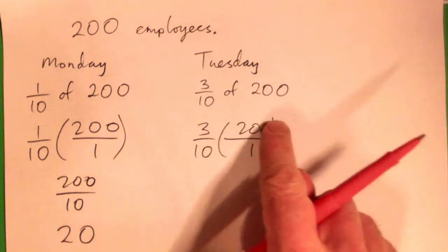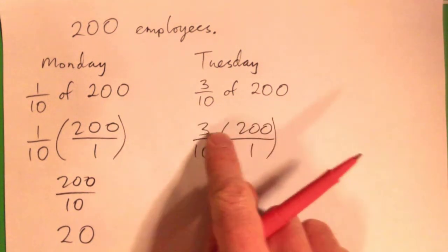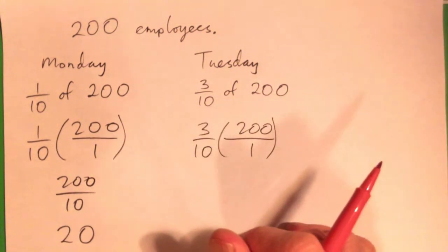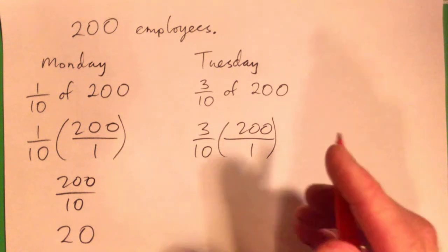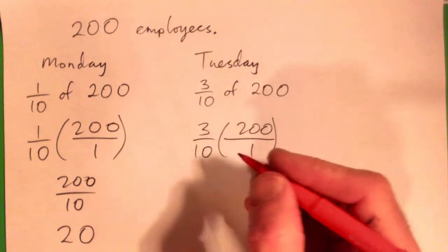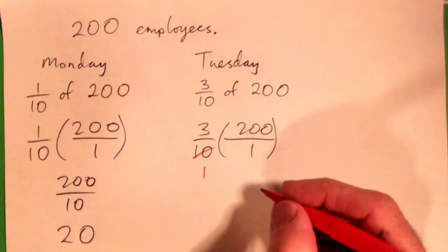This time I'm going to cross-cancel before I multiply. I mean, I could write that as 600 over 10. That'd be fine. 10 to 10 goes once. 10 to 200.